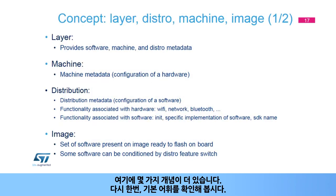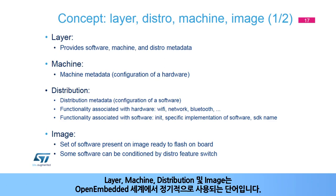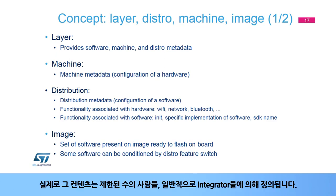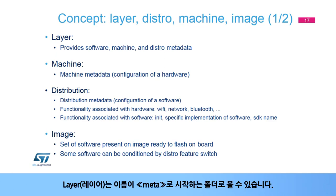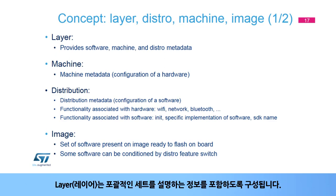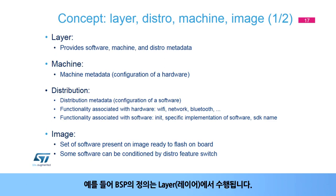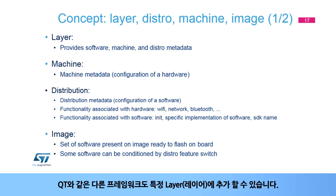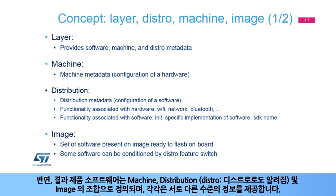A few more basic vocabulary concepts used regularly in the OpenEmbedded world: layers, machine, distribution, and image. In practice, their content is defined by a limited number of people, typically integrators. A layer can be seen as a folder whose name starts with 'meta' — it contains recipes and configuration files, organized to describe a comprehensive set. For example, the definition of a BSP is done in a layer. Other frameworks such as QT can also be added in a specific layer. The resulting product software is defined by the combination of a machine, a distribution (also known as distro), and an image, each providing a different level of information.